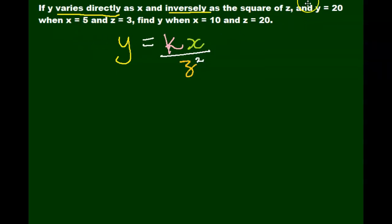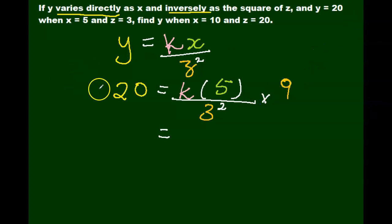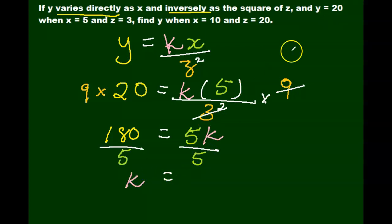Now that we've written down our equation, we can plug in our numbers. So we're going to take the next set of information. So y equals 20, we don't know what our k is, x equals 5 and z equals 3. And don't forget the square. 3 times 3 is 9, so I'm going to multiply both sides by 9 to get rid of my 3 squared. 9 times 20 gives me 180, and I'm left with that being equal to 5k. Divide both sides by 5 and that leaves us with k equals 36.